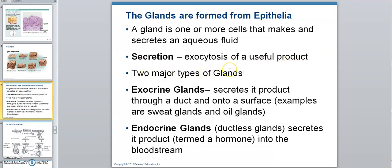The two major types of glands are exocrine glands and endocrine glands. An exocrine gland secretes its product through a duct and onto a surface, like your sweat glands and oil glands.